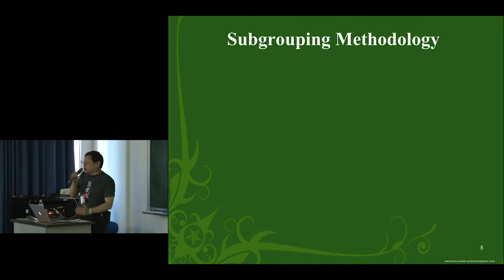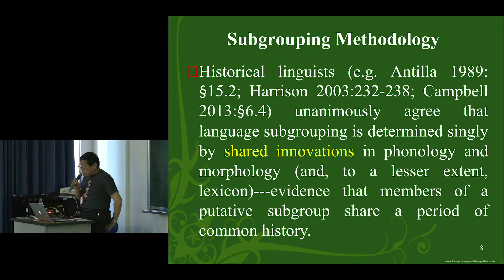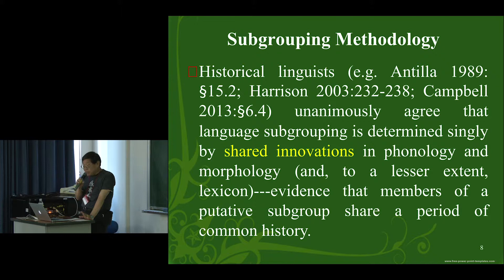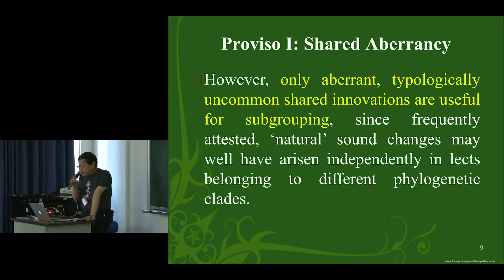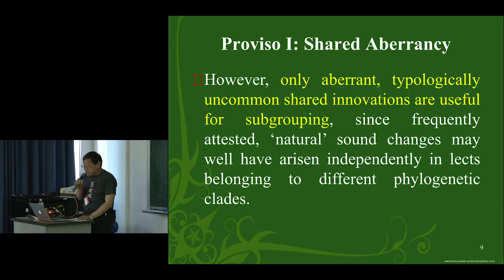Before I proceed, I would like to say a few words about subgrouping methodology. I wish I didn't have to do this, but apparently in the case of Tibetan languages we must remind scholars of what the orthodox methodology requires. Historical linguists unanimously agree that language subgrouping is determined solely by shared innovations in phonology and morphology, and to a lesser extent lexicon, because these are evidence that members of a putative subgroup share a period of common history. That statement must come with two qualifications. First, only aberrant, abnormal, typologically uncommon shared innovations are useful for subgrouping, because frequently attested or natural sound changes may well have arisen independently in languages or dialects belonging to different phylogenetic clades.